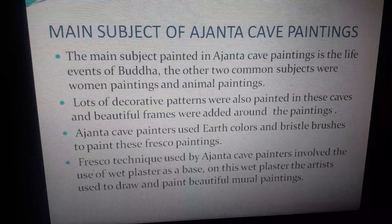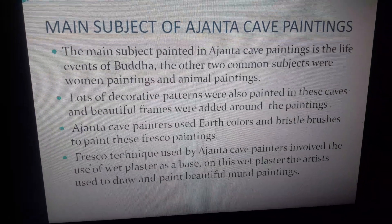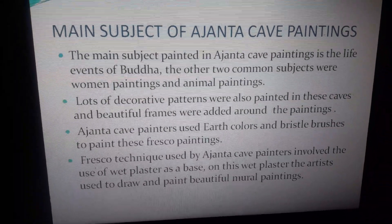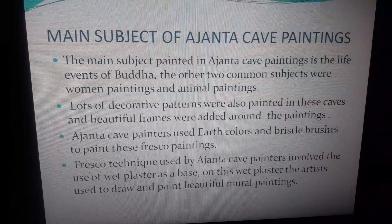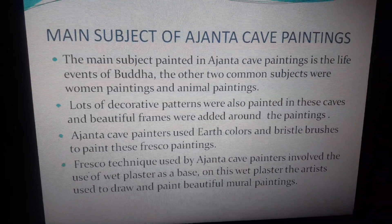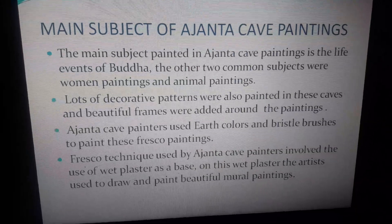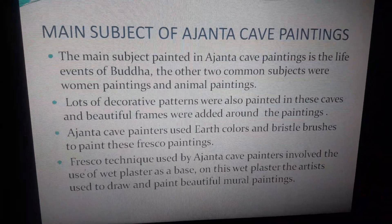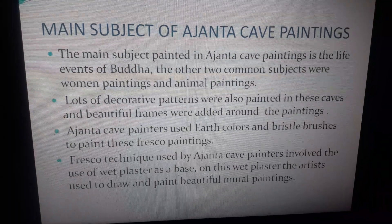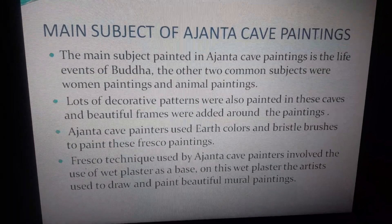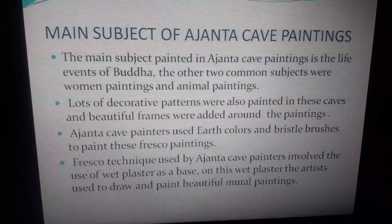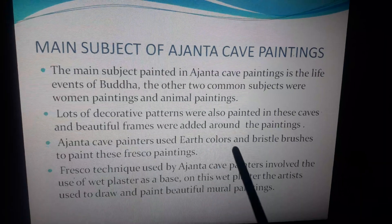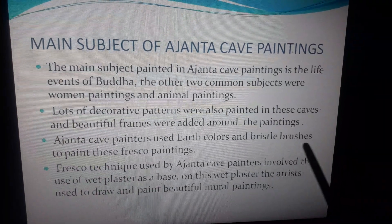The main subject of Ajanta cave paintings is the life events of Buddha. The other two common subjects are women paintings and animal paintings. Lots of decorative patterns and beautiful frames were added around the paintings. The artists used earth colors and bristle brushes — meaning rough brushes — to paint these fresco paintings.